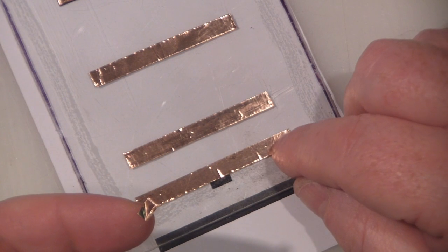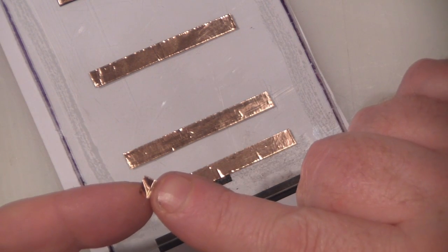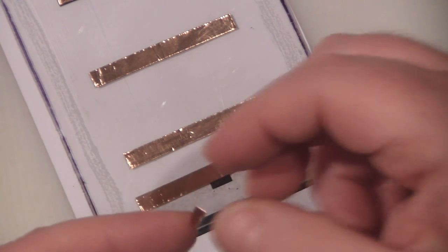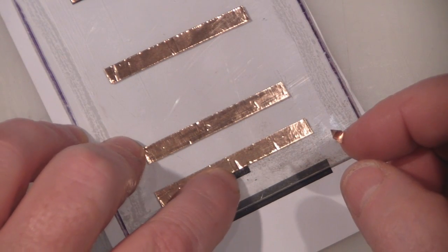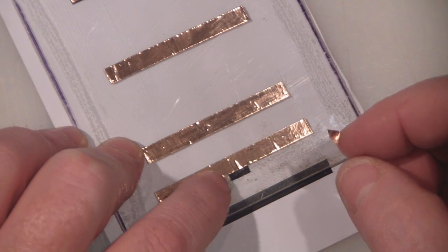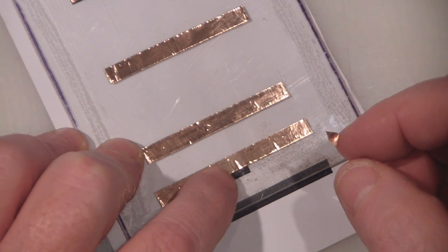So once you've got the driven element in place, you want to cut yourself a little rectangle of the copper here. We're going to stick it down here where you can see this tab, just so we've got a bigger solder point to solder to.